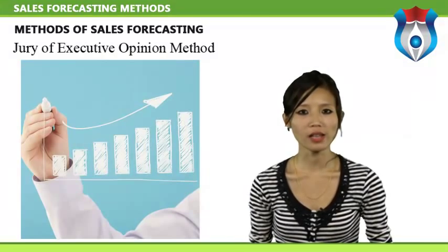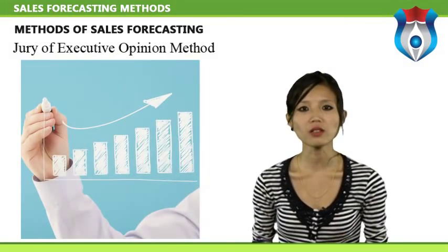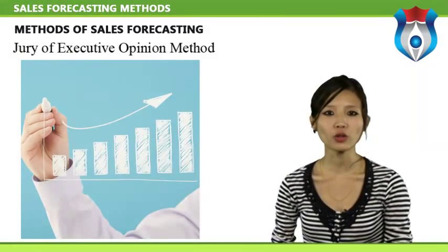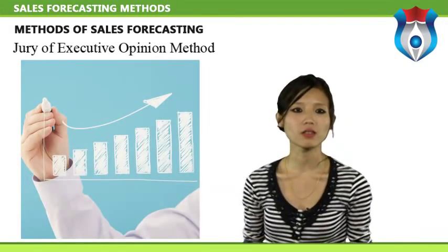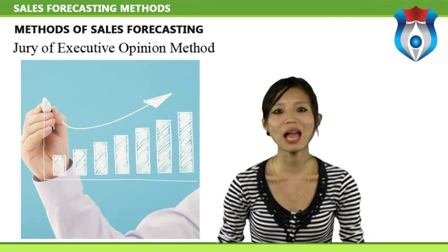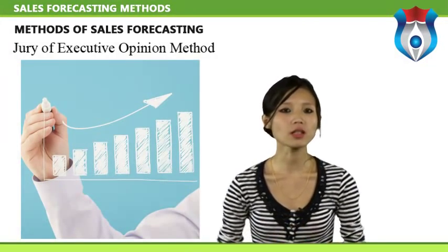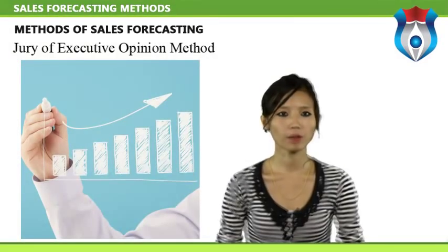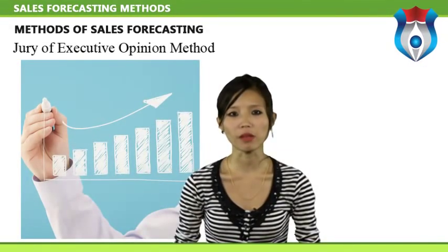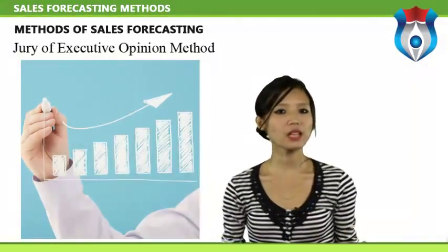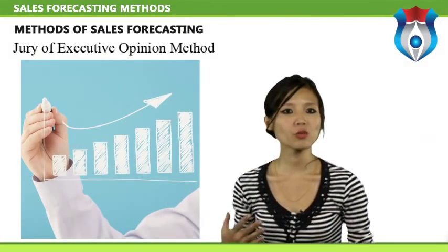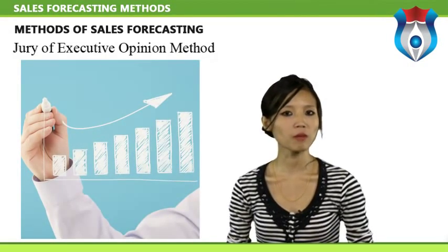In the jury of executive opinion method, appropriate managers within the organization assemble to discuss their opinions on what will happen to sales in the future. It is part of a set of techniques useful in situations where past data did not exist, causal relationships have not been identified, or some major change has occurred in the forecasting context. A similar forecasting method developed more recently is called the Delphi method. The Delphi method also gathers, evaluates, and summarizes expert opinion as a basis for a forecast, but the procedure is more formal than the jury of executive opinion method.